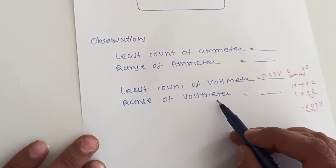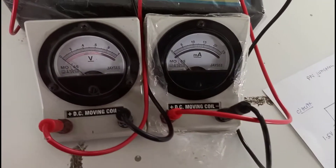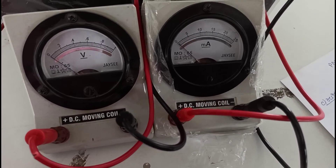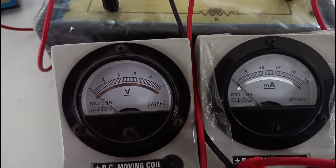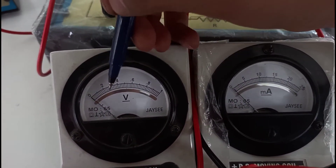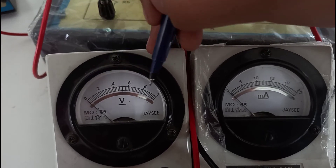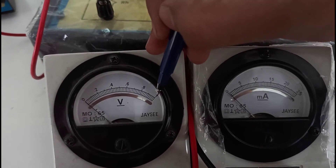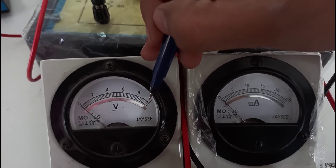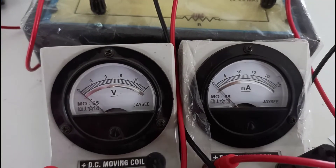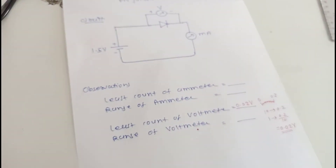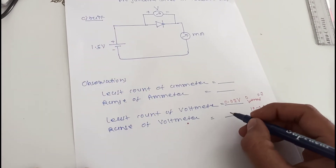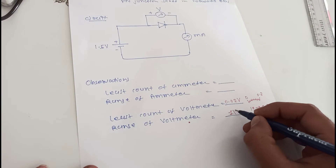Now we find the range of the voltmeter. The maximum capacity of the voltmeter is 1 volt, so this is the range of the voltmeter. We can write the range is 1 volt.